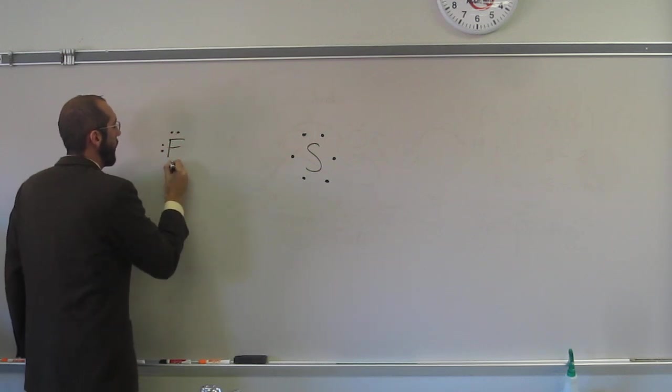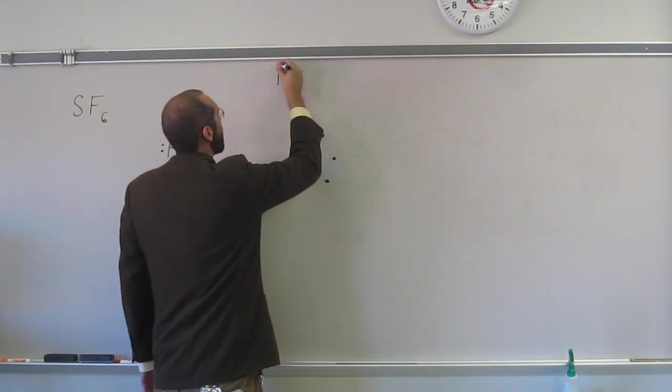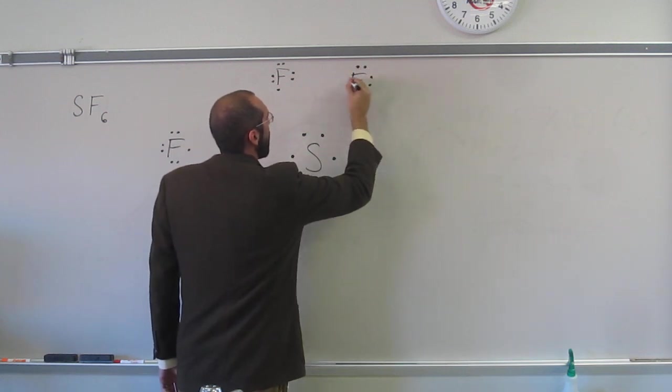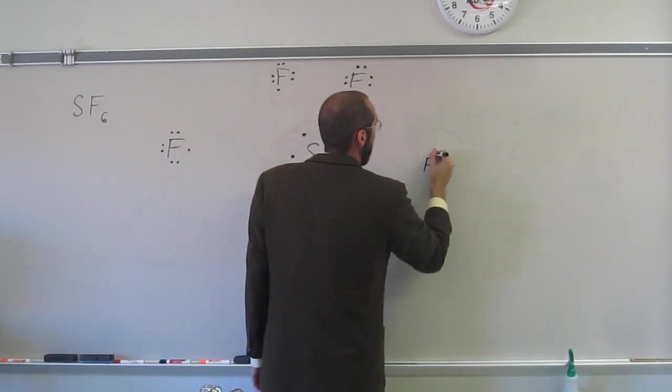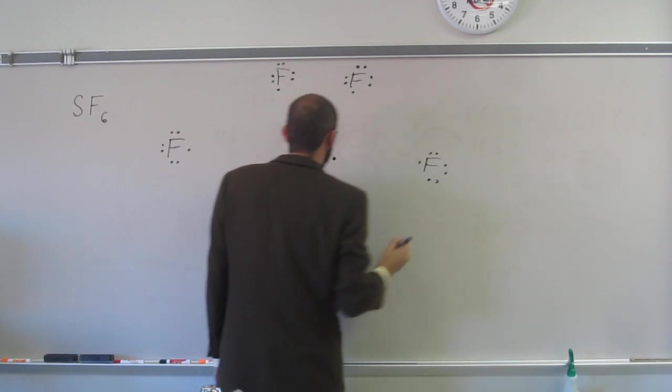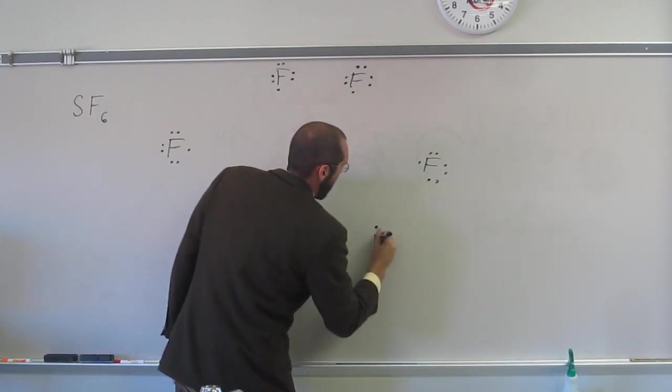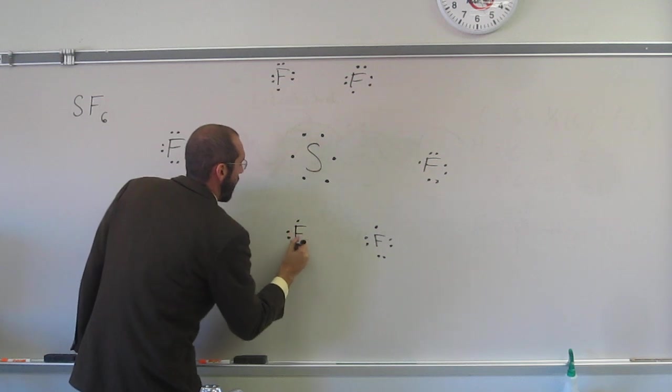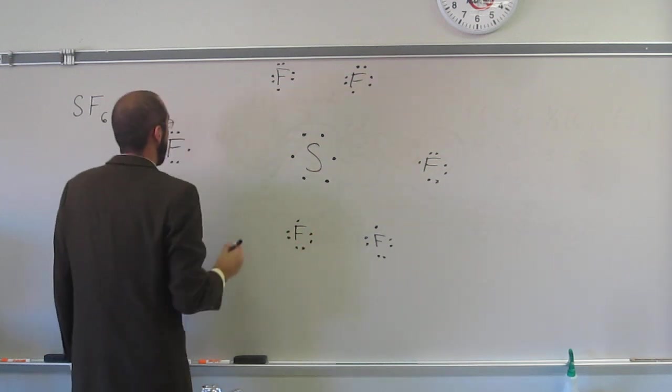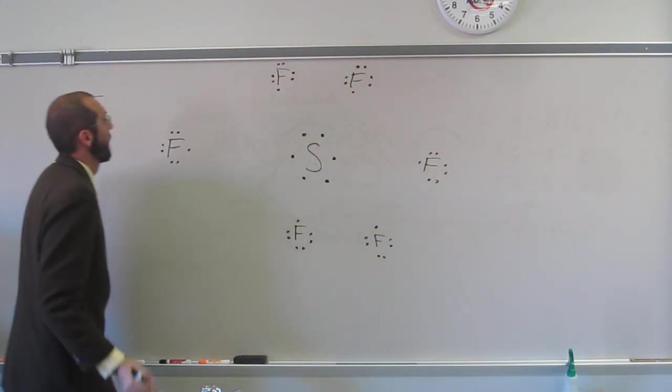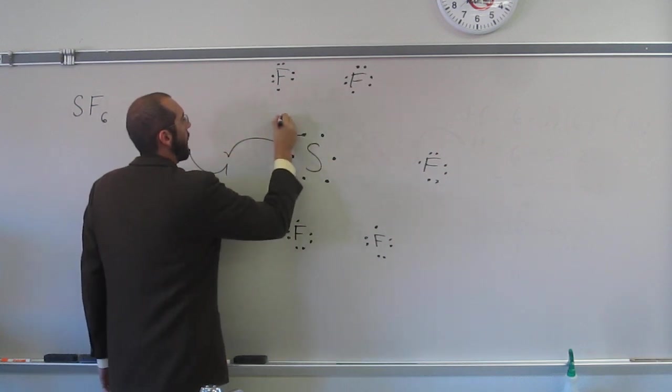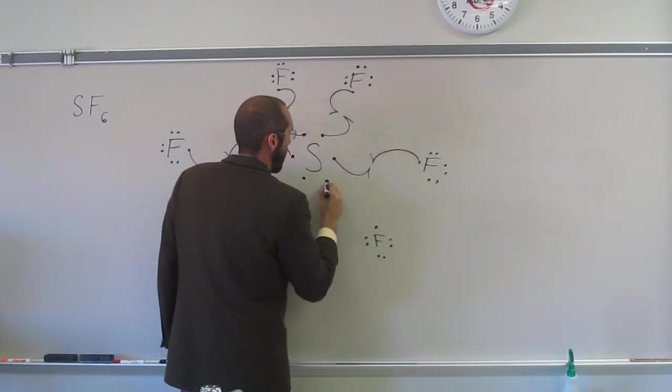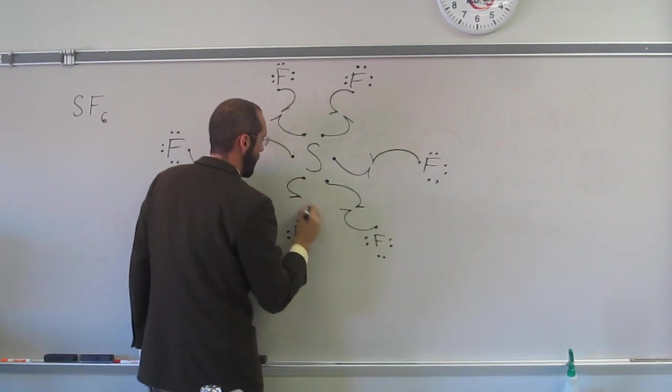Draw our fluorines. So again, I don't know if I actually need to do this for you guys, but we will anyways. One, two, three, four, five, six. Like I said, each one of the electrons in the pair will make a bond.